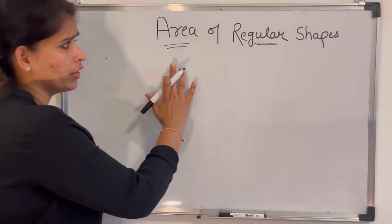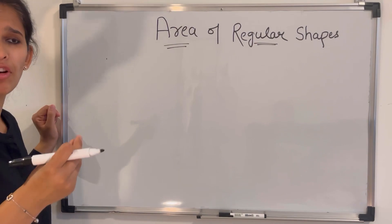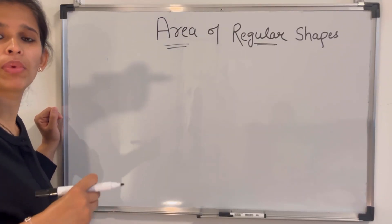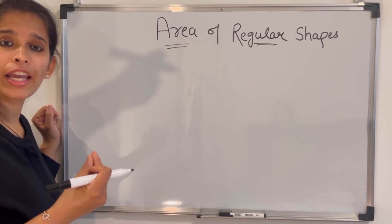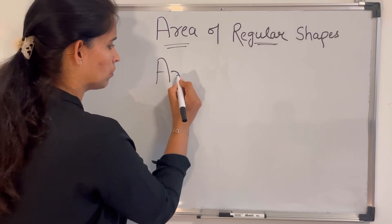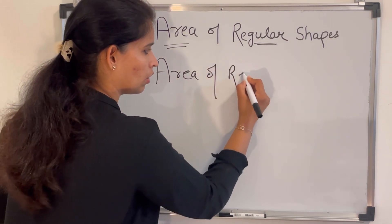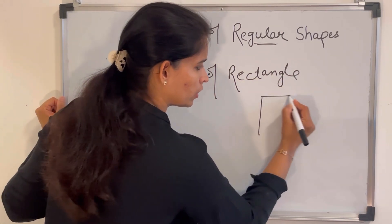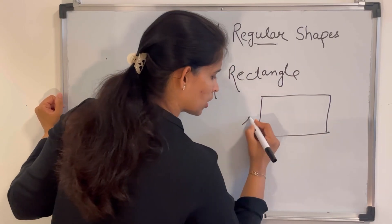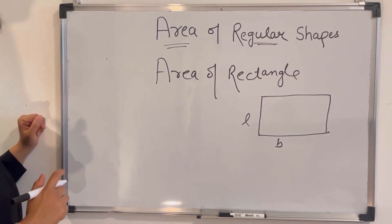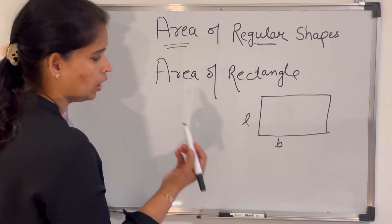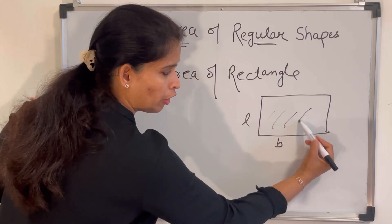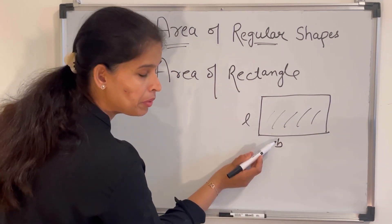When we learn the area of regular shapes, there are some formulas to keep in mind, because through those formulas we can solve our problems very easily. First we learn the area of rectangle. The area of rectangle is length multiplied by breadth.